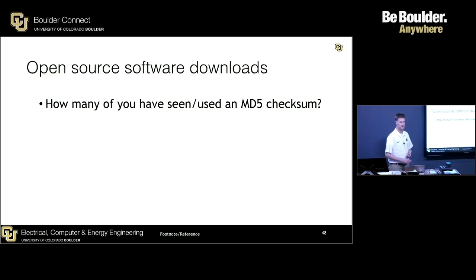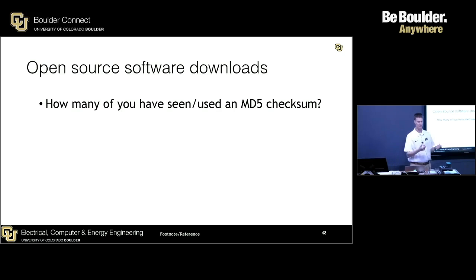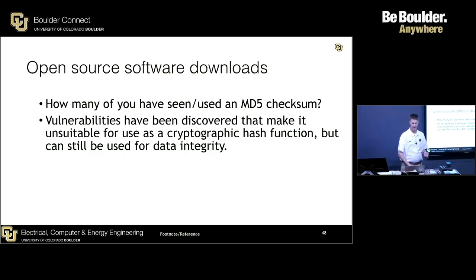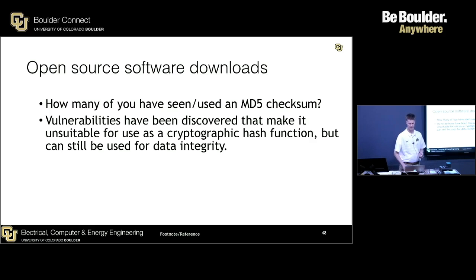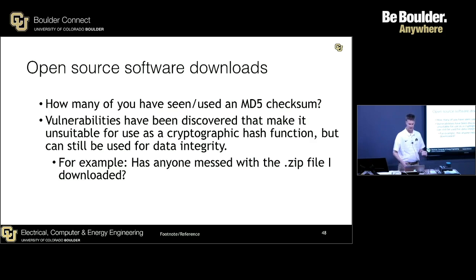Open source downloads are worth being careful about. Many come with an MD5 checksum — MD5 is a utility in Linux. You go to the website, download the executable or source code, and they provide an MD5 checksum. Assuming the website hasn't been hacked and the checksum hasn't been updated to match contaminated code, you can use the MD5 checksum to verify the zip file wasn't modified during download. Note that vulnerabilities have been discovered in MD5 that make it unsuitable as a cryptographic hash function, but it can still be used for basic data integrity checking.